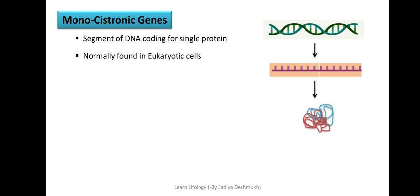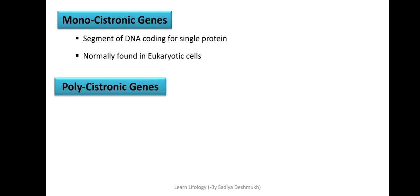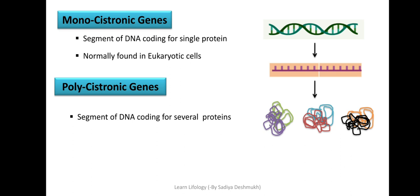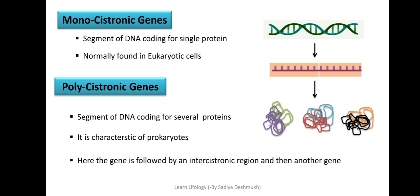Polycistronic genes code for several proteins from a single gene. The gene forms an mRNA by transcription and when translated it produces more than one protein — this is a polycistronic gene. It is a characteristic of prokaryotes: because prokaryotes have a short genome, they must encode many characters in limited genetic material. In polycistronic genes there are intercystronic regions — short regions between two cistrons before the next gene starts.